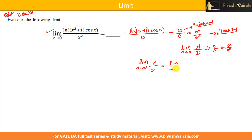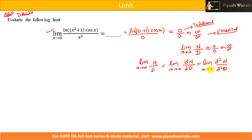So: limit x→a equals limit x→a of [derivative of numerator] divided by [derivative of denominator], separately — not using the quotient rule. After taking the derivative, try putting the limit again. If you get 0/0 or ∞/∞ again, take the derivative again: second derivative of numerator divided by second derivative of denominator. You can keep repeating this. The limit of the original expression equals the limit of these derived expressions.